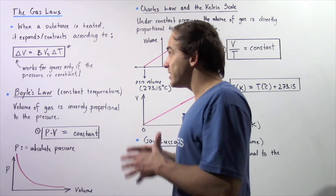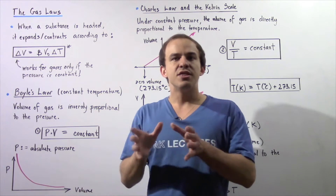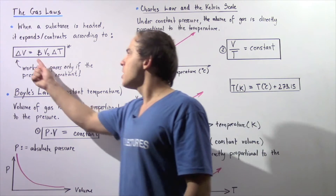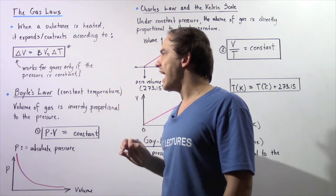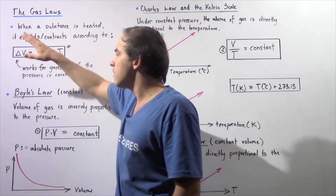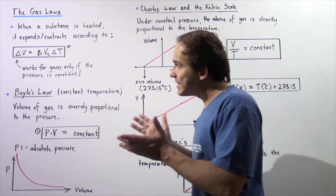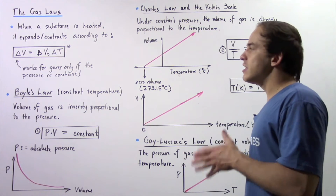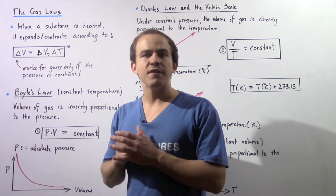Now recall that by definition gases are very much compressible. When you take a gas and place it into a container, that gas will completely fill that container, meaning gases are capable of very large changes in volume. This equation only works for gases if the pressure remains constant and the change in volume is very small compared to the initial volume. So generally, this equation isn't very useful for gases, and that's exactly why we need to develop three equations that will give us a relationship between temperature, pressure, and volume of a gaseous system.